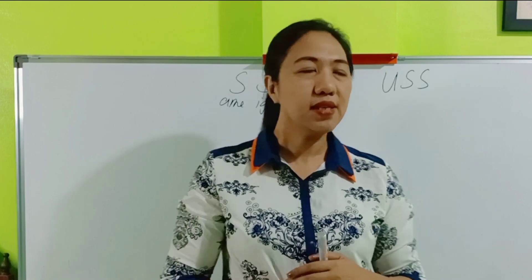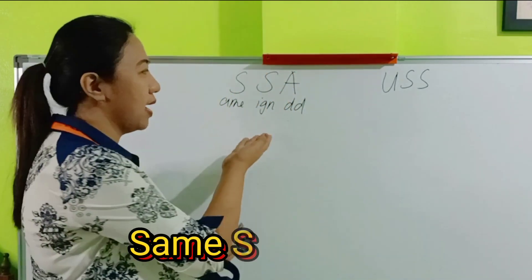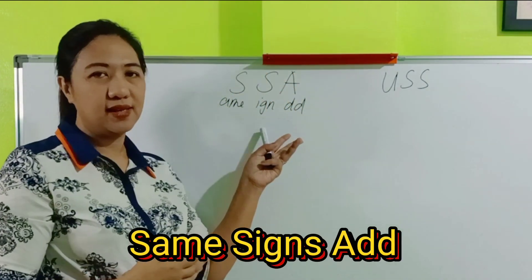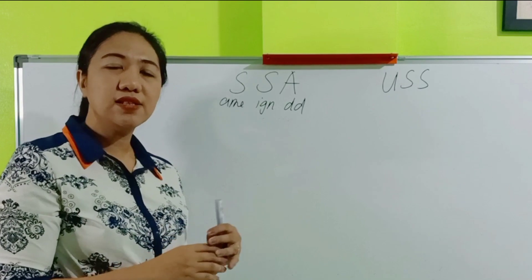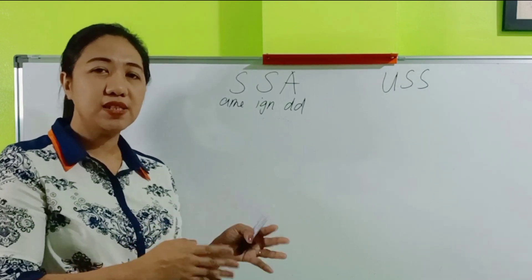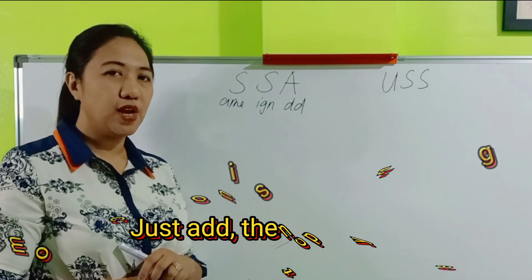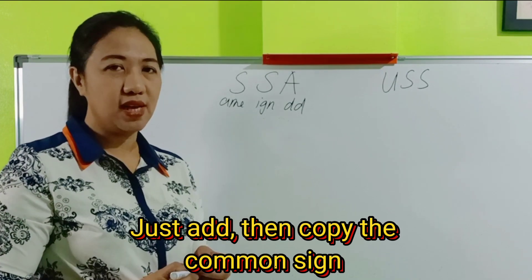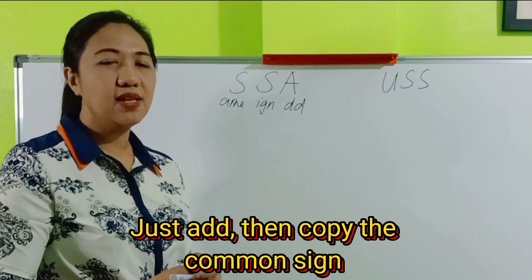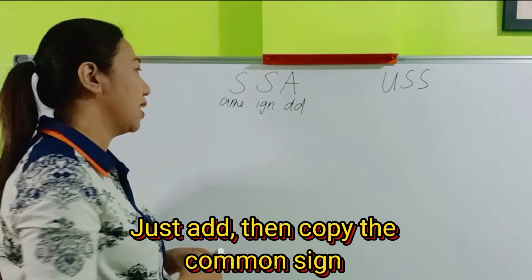What does SSA mean? SSA means same sign, add. If the addends are both positive numbers, you just add. And if they are both negative numbers, just add, and then copy the common sign.